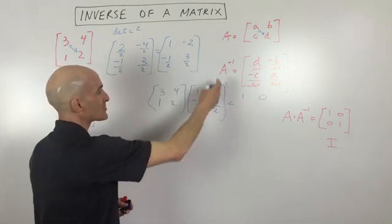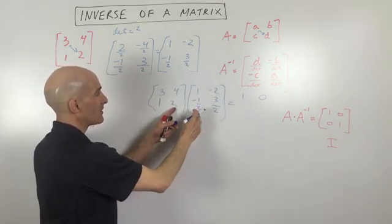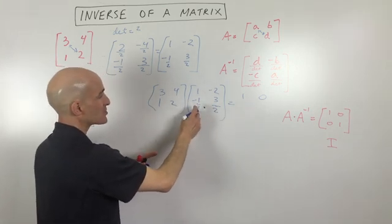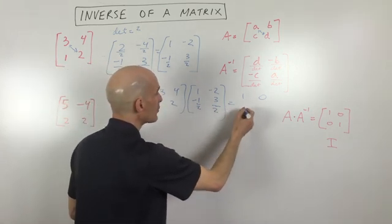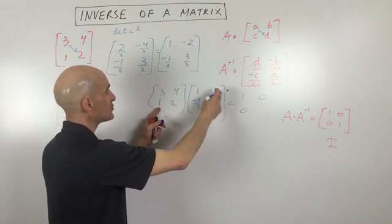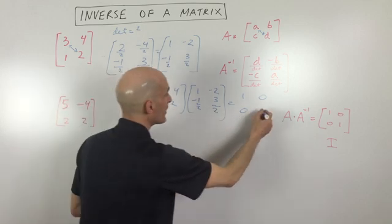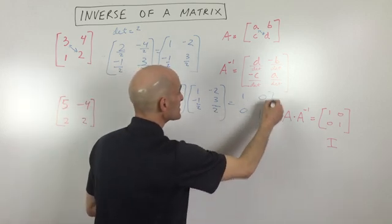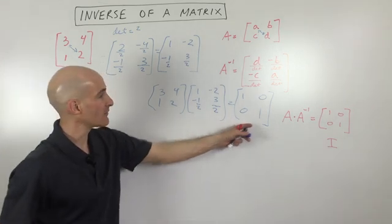Multiplying rows times columns — second row, first column, we get one and negative two halves, which is negative one. One plus negative one is zero. And then the second row, second column, we get negative two plus positive three, which is one. So you can see we get the identity matrix.